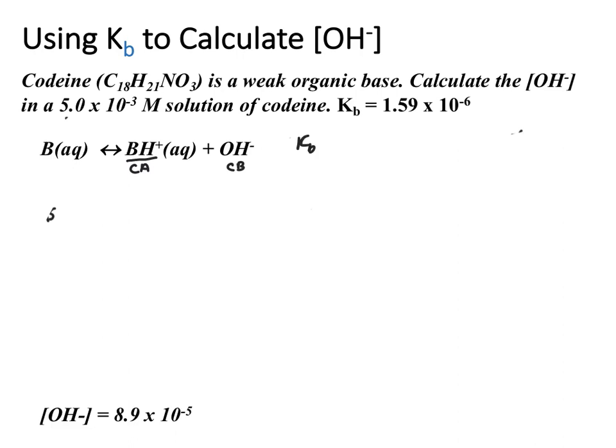Our Kb equilibrium expression is the following. Notice I'm using generic models for my base and the conjugates just to keep it simple. If you wanted to write out the codeine formula, you totally could. Now that we have our equilibrium expression, we also know our equilibrium constant Kb, so we'll plug that in.